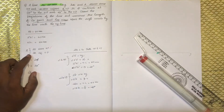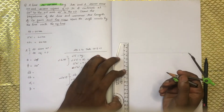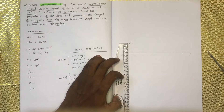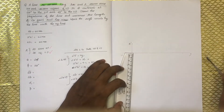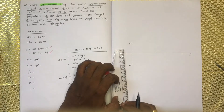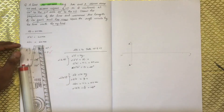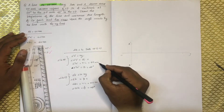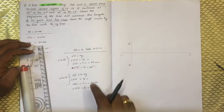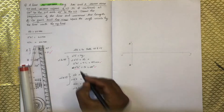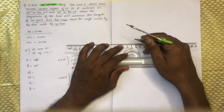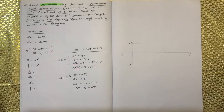A is 25mm above HP. AB is 30mm in front of VP. The angle of theta is equal to 35 degrees. The angle does not change when theta equals 35 degrees. Now we are drawing the horizontal line for the construction.